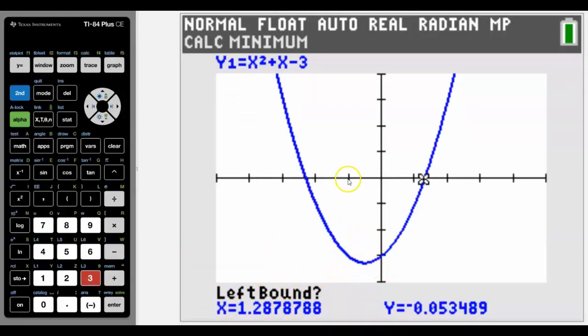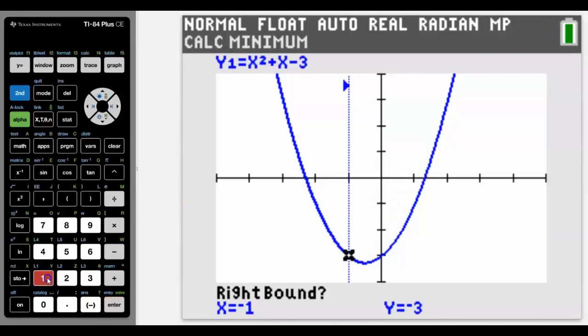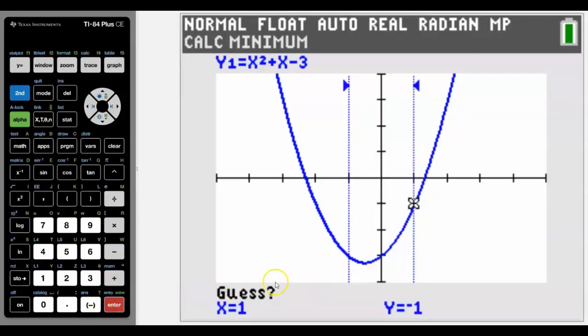So I'm going to do the quick way again and we can see there's somewhere between negative one and one, so I'm simply just going to type in negative one for the left bound, one for the right bound. I don't need to guess because it's between those two arrows so I can just press enter and it will give me the minimum.